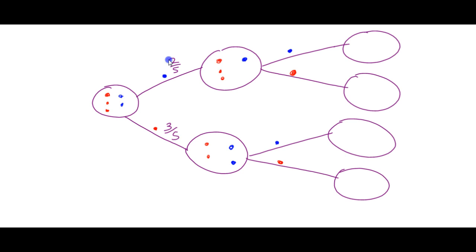Looking at the outcomes: if two blues have been drawn, there are no blues left; one blue drawn leaves one blue; and if we drew red first, two blues remain. Working out the second-draw probabilities from the diagram: drawing blue after drawing blue is one out of four; drawing red after drawing blue is three out of four; drawing blue after drawing red is two out of four; drawing red after drawing red is two out of four.